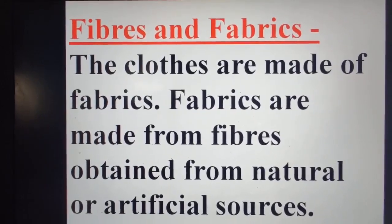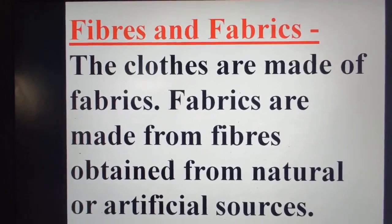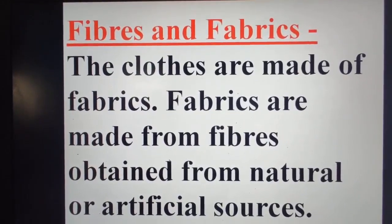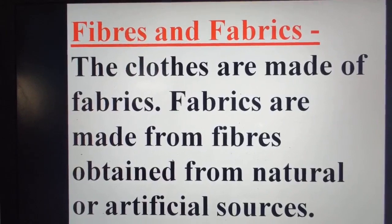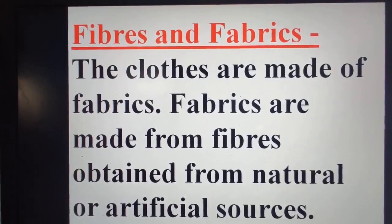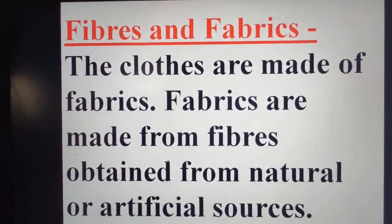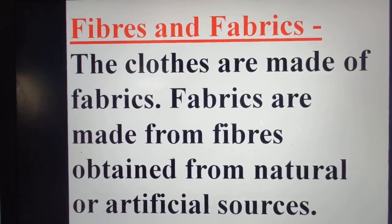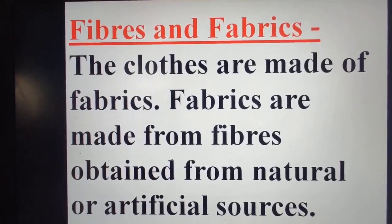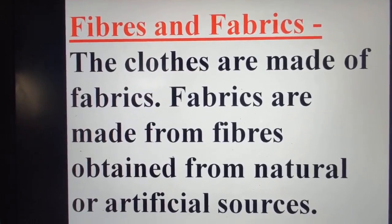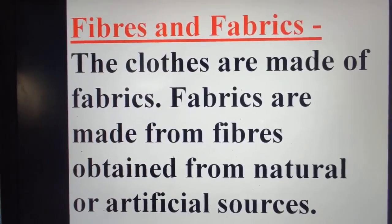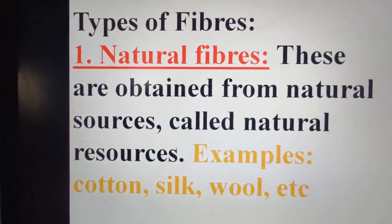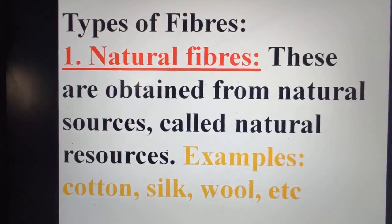For example, when we go with natural fibers, they are cotton. When we talk about artificial sources, we go for nylon or rayon. So these are examples of natural and artificial sources. The clothes are made of fabrics, and fabrics are made from fibers obtained from natural or artificial sources.